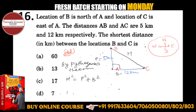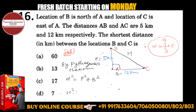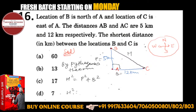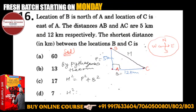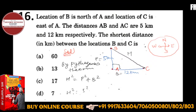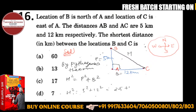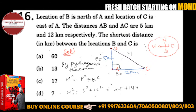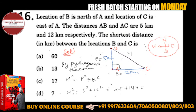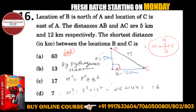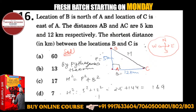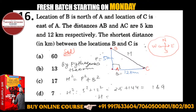By Pythagoras theorem: H squared equals perpendicular squared plus base squared — 5 squared plus 12 squared — which is 25 plus 144, equal to 169. So H equals 13.